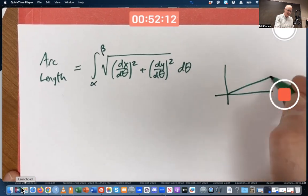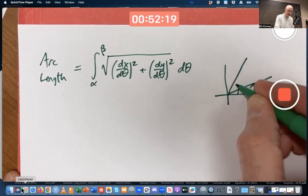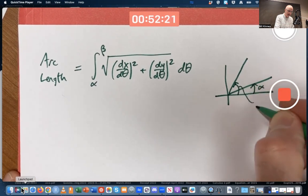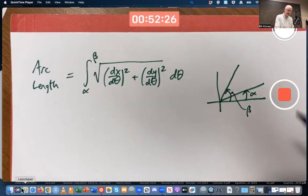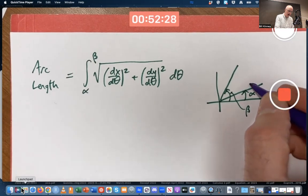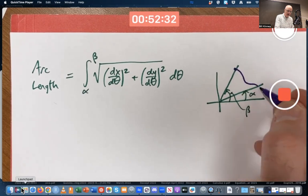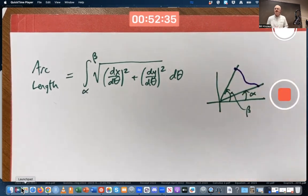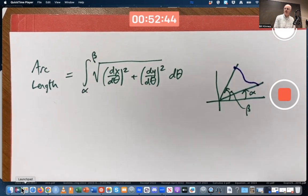A generic picture might look like this. Let's say this is alpha here, and this is beta there. Theta is varying between those two values, giving you a polar curve. R is varying. Maybe you get something like this. We're after the arc length of that curve. Using the parametric equations form, it's the same formula as in section 8.2, the previous section.